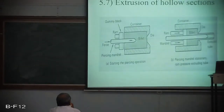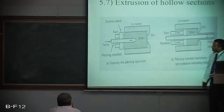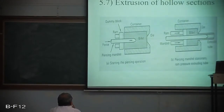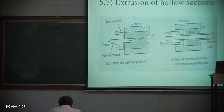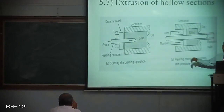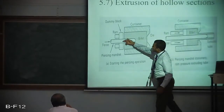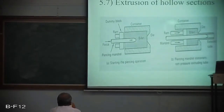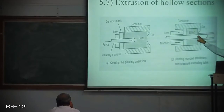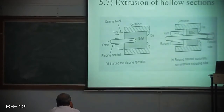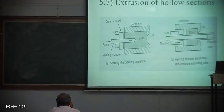Extrusion of hollow sections or seamless pipes: extrusion is the best method for making seamless pipes. Unlike welded pipes, seamless pipes have no discontinuity. A mandrel is attached to the ram and pierced until the entrance of the die opening. In the second stage, the mandrel is completely pierced and a hollow cross section is extruded, making long hollow tube production possible.